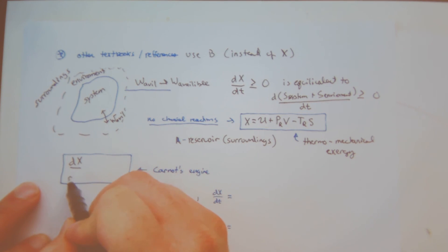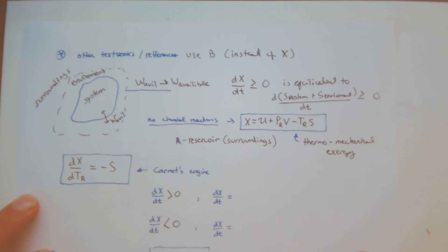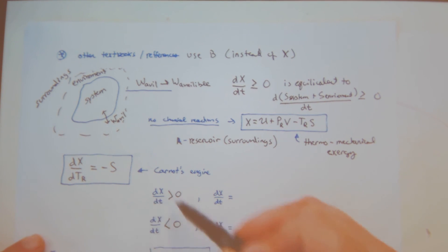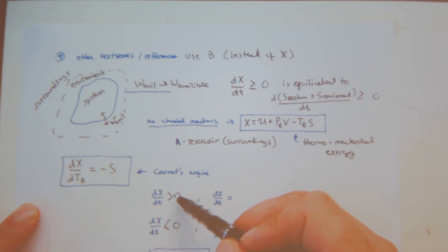For a Carnot engine, the change in the exergy with respect to the change in my reservoir temperature is equal to minus entropy. So dX dT greater than zero. And I can also have dX dT less than zero. In this context, just like we had work reversible for energy consuming and an energy producing device, so there's going to be these different limits associated with energy consuming and energy producing device. So this actually is dX dT represents the maximum power generated.